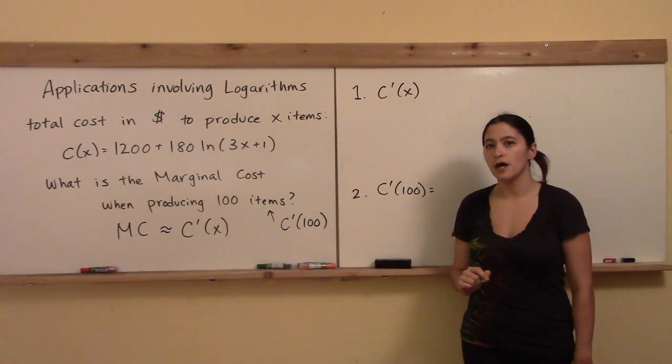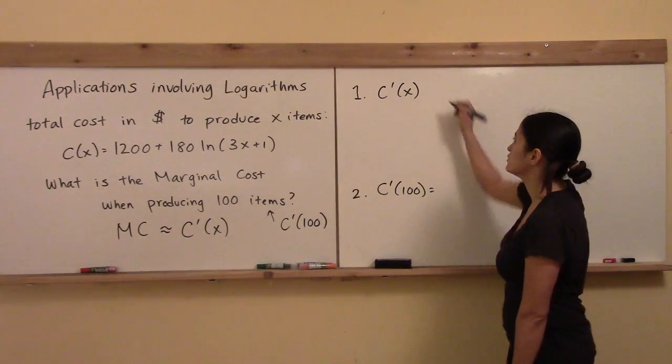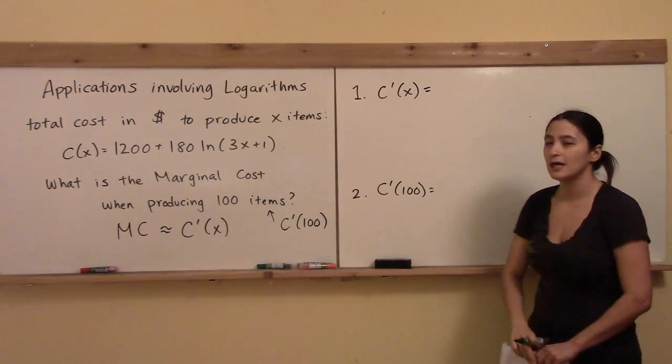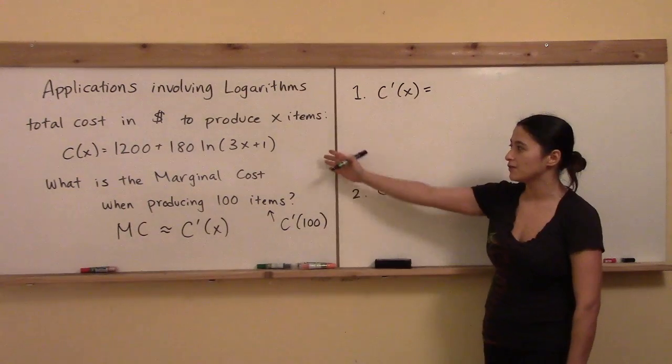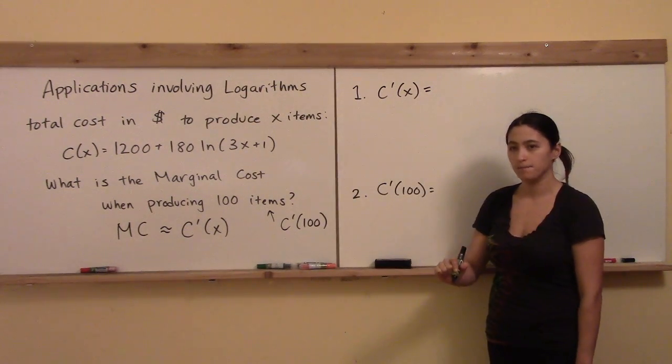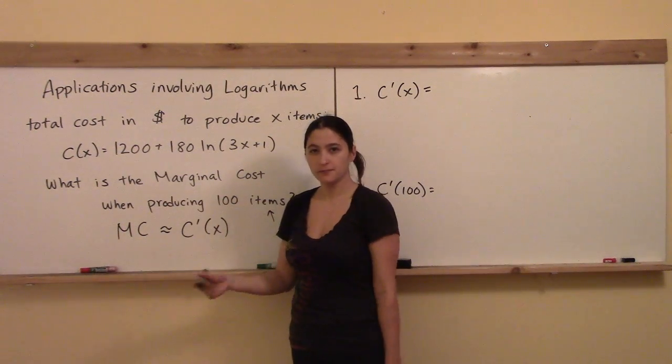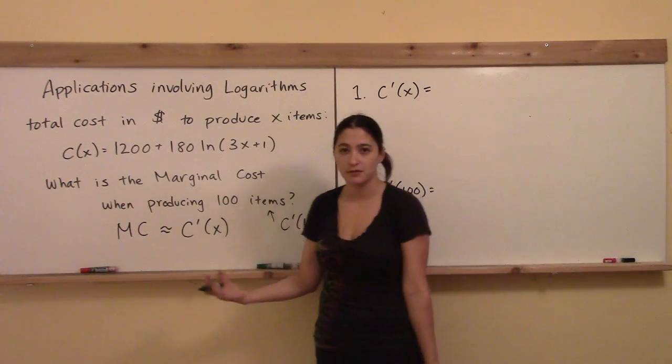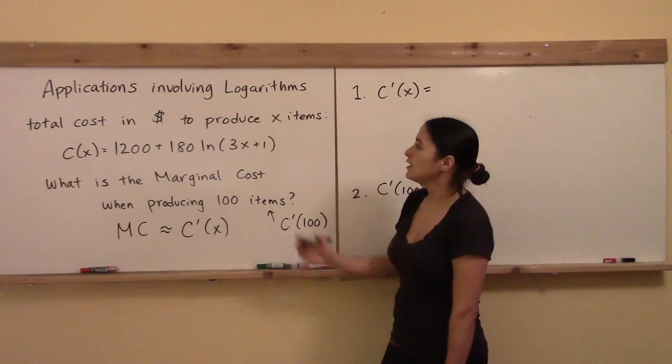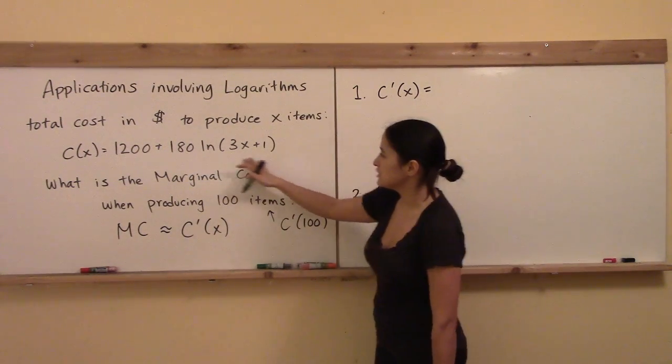Alright, so hopefully you've already watched the video that describes the derivative of logs because now we need to take the derivative of this function inside an application. First step, what's the derivative of the number 1200? Just zero. As usual, the derivative of all numbers is zero.